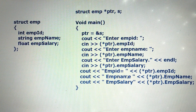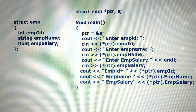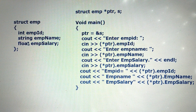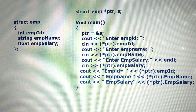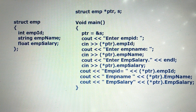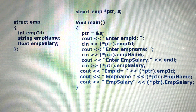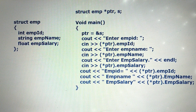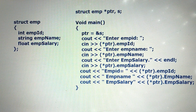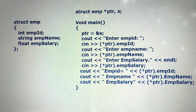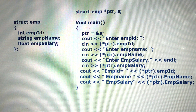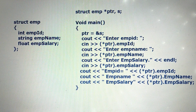Then we will get the output of the structure details — the structure members. Close the program. This is the way we can write the program using structure pointers. We have now studied how to implement the structure pointer in a program. Declare the pointer before the main function and it is global; after the main function, it is local.